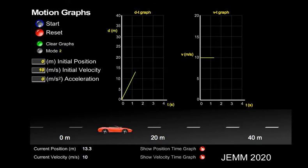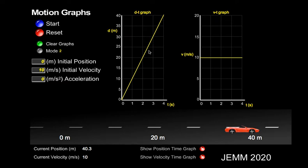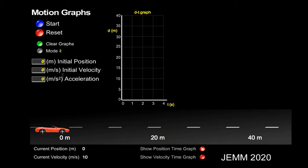Let's look at these two graphs at the same time. On a position time graph, this line represents 10 meters per second — the slope of the line is the velocity. On a velocity time graph, this line represents 10 meters per second, and notice the slope is zero. For a velocity time graph, the slope represents the acceleration. So we've looked at constant velocity situations.